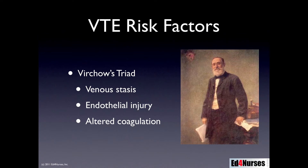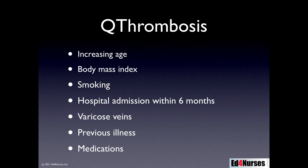That's Virchow's triad of risk factors, which we commonly use to determine if a patient is at risk for a blood clot. However, there is now a group that has developed a risk factor analysis process called QThrombosis. If you go to qthrombosis.org, you'll see more information. They look not just at Virchow's triad but also additional risk factors. If you plug in the patient's information on the website, it gives you a percentage score of the patient's risk for venous thromboembolism.